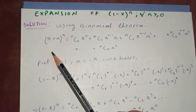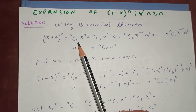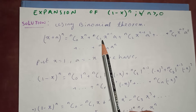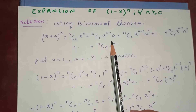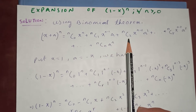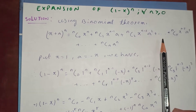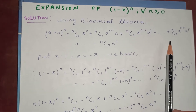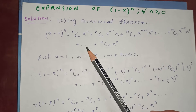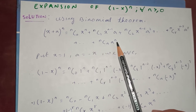So (x plus a) to the n is: nC0 times x to the n, plus nC1 times x to the n minus 1 times a, plus nC2 times x to the n minus 2 times a squared, plus so on, plus nCr times x to the n minus r times a to the r, plus so on, plus nCn times a to the n.